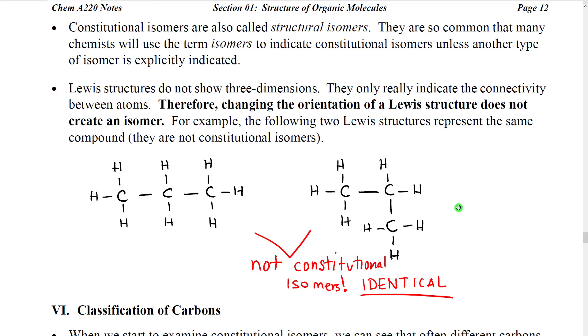So, here's a very simple example. If we look at this Lewis structure, we have carbon with three hydrogens connected to carbon with two hydrogens connected to carbon with three hydrogens. In this structure, we have carbon with three hydrogens connected to carbon with two hydrogens with a 90-degree turn connected to a carbon with three hydrogens.